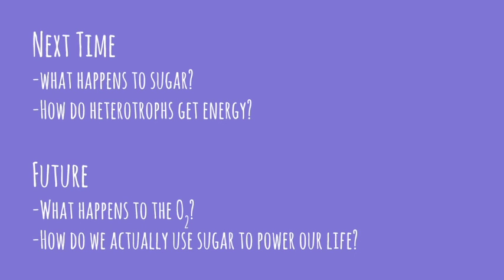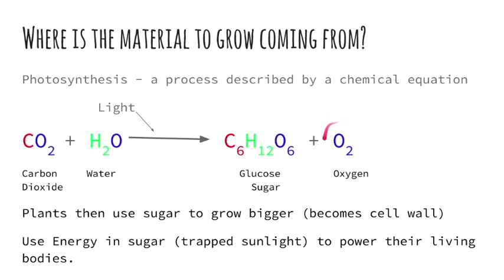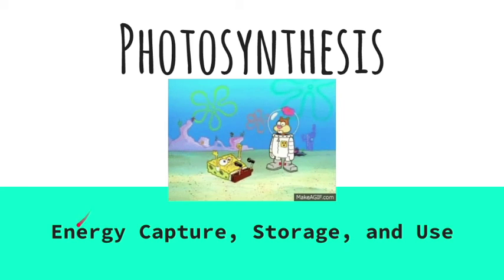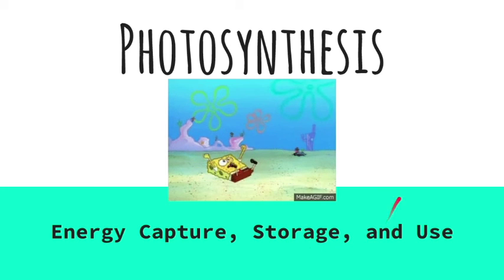In next week's video, we're going to be talking more specifically about what happens to sugar after it's made by plants, and also how heterotrophs get energy — so far we've only really talked about how autotrophs get energy. In the future, we're going to talk about what happens to that oxygen that came out of photosynthesis, and how we actually use sugar to power life. The larger unit we're working on is all about energy capture, which is photosynthesis; storage, which is that sugar; and then later on we'll talk about how energy is used.